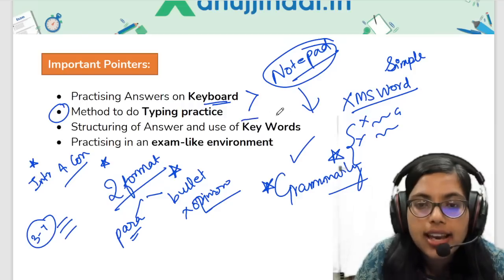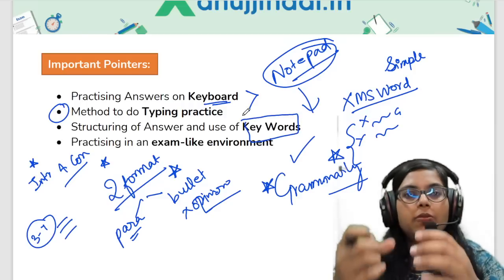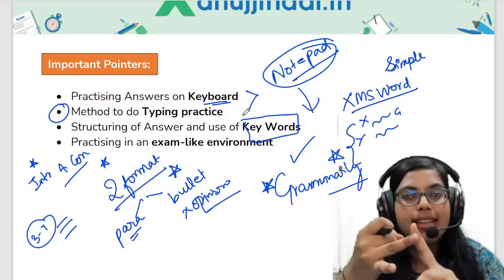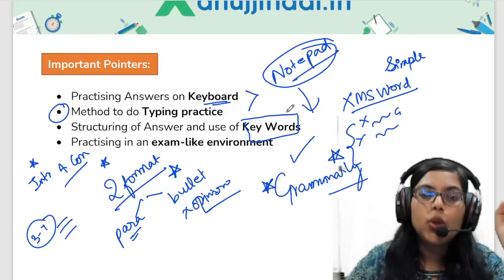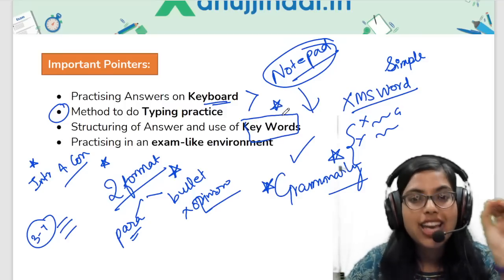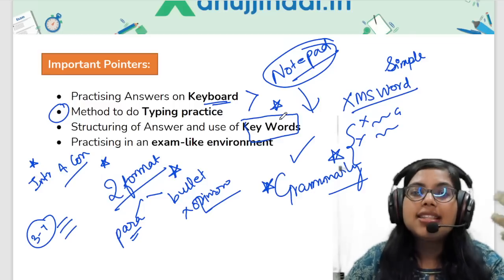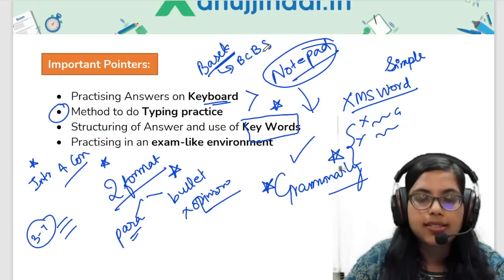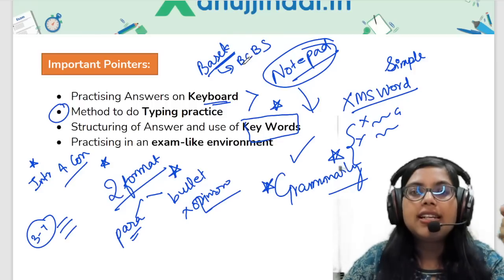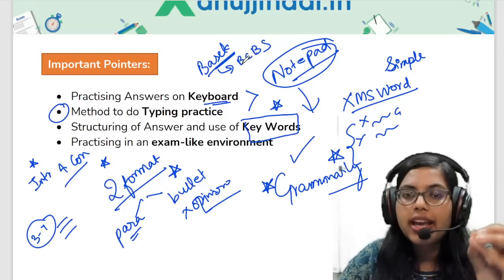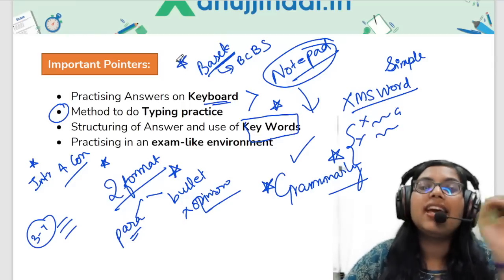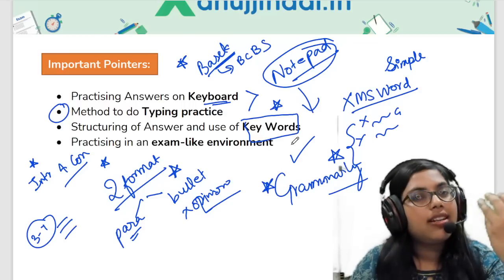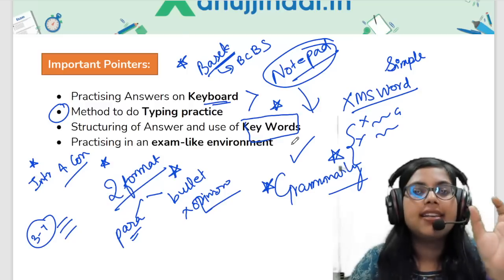Keywords — always remember this. Whether your answer is being checked by a computer or by a manual examiner, you are required to use as many keywords associated with that answer as possible. For example, if there is an answer on Basel norms, you cannot forget to mention BCBS — the Basel Committee on Banking Supervision — or the Capital Adequacy Ratio. Such terms and keywords you cannot miss. Keywords play a very important role whether it is online or manually checked.